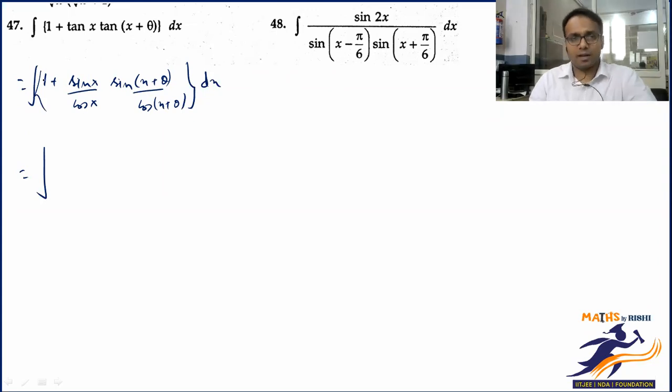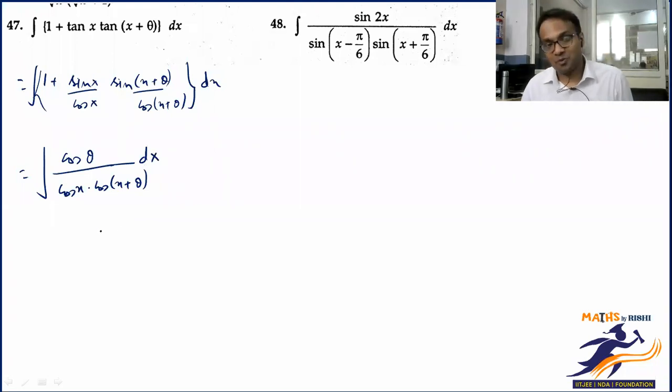Let's make a start. 1 ki jagah pe 1 hai, koi cos x/cos x hai. Isme ka hi ekdum plus kis ko woh maine likha, maine tan x ko sin x/cos x likha. Uske baad, apas concept on the track cos A cos B plus sin A sin B, what is that? cos(A - B). So cos θ bachega in the numerator, denominator mein apas cos x into cos(x + θ).